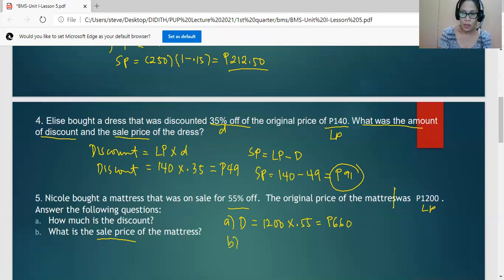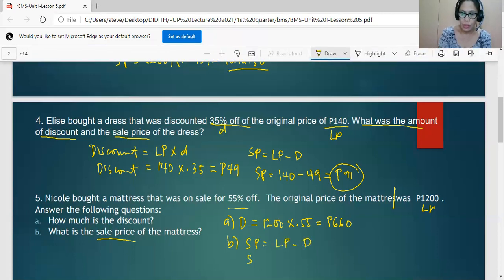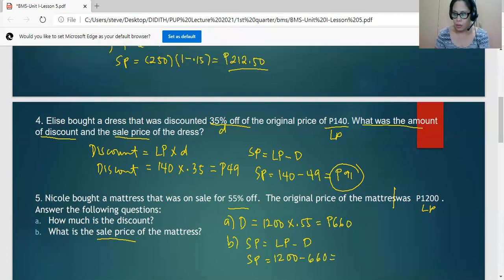For part B, the selling price is list price minus the discount. So the selling price is equal to 1,200 less the discount 660, so we have 540 pesos as the net price.